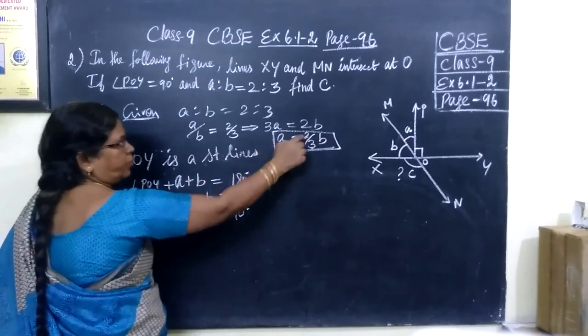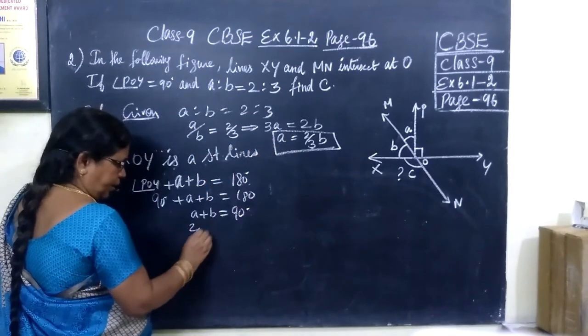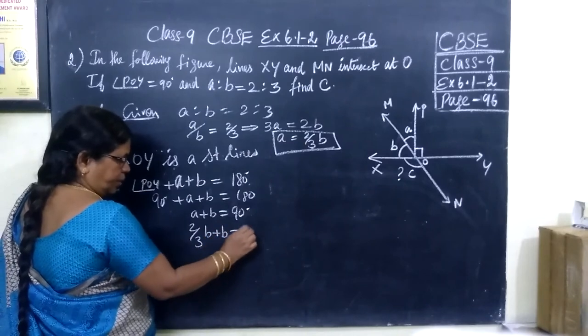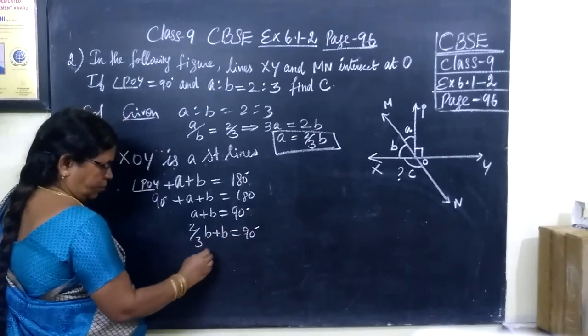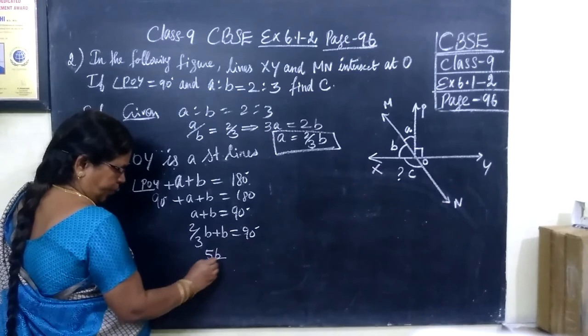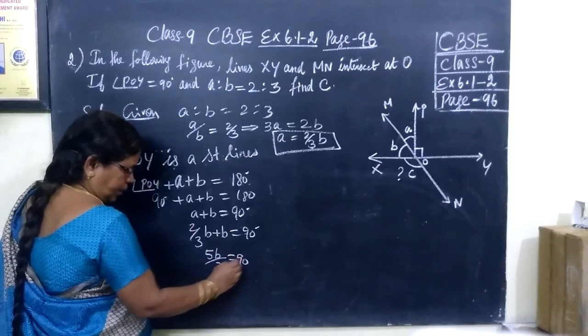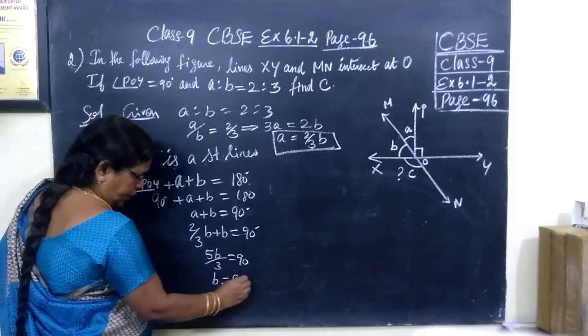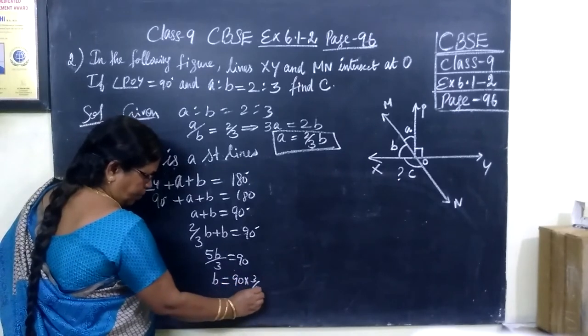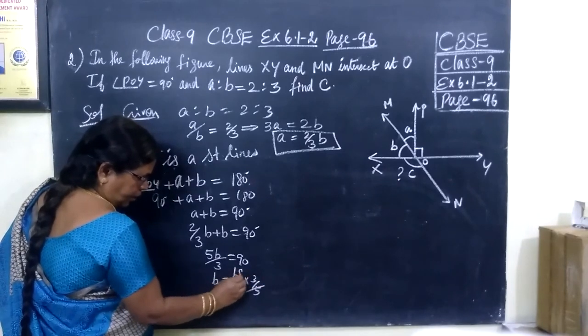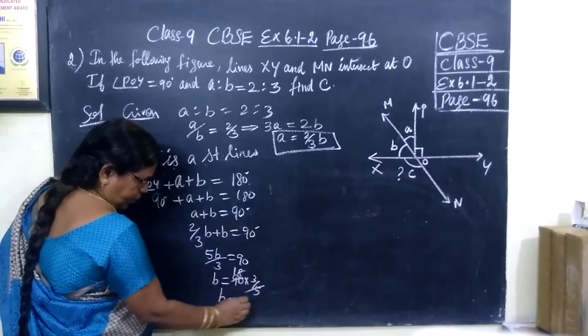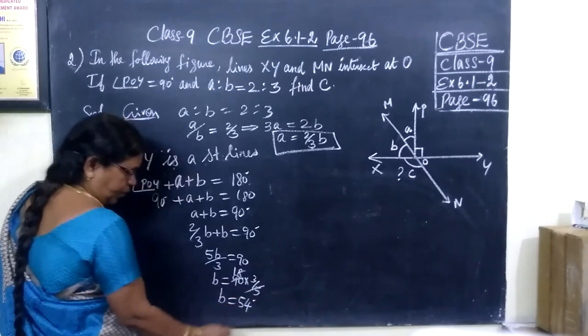So instead of A, you can write 2 by 3B plus B equals 90 degrees. So 5B by 3 equals 90. Therefore, B equals 90 into 3 by 5. So if we cancel, we are getting 18. This implies this is 54.